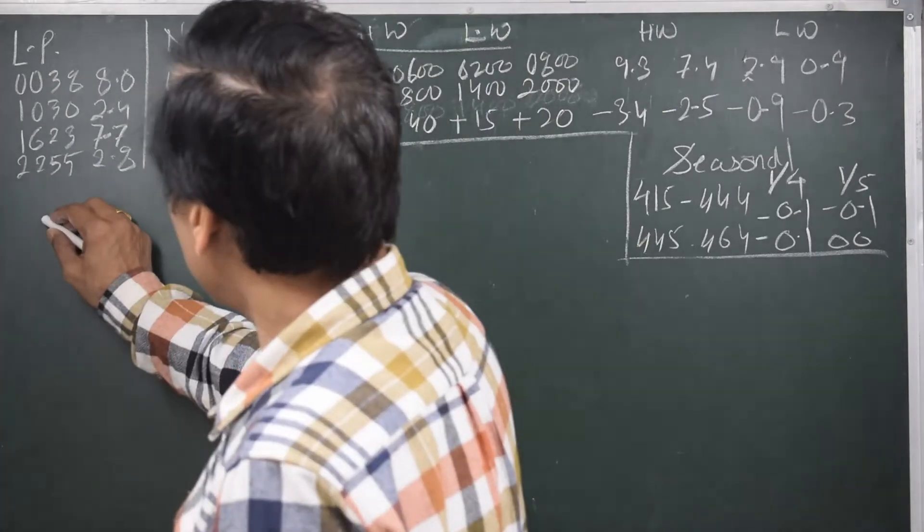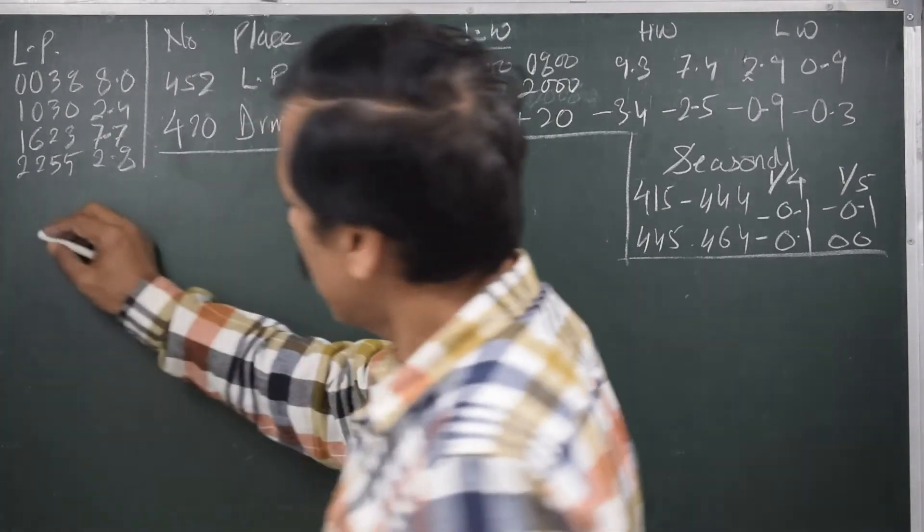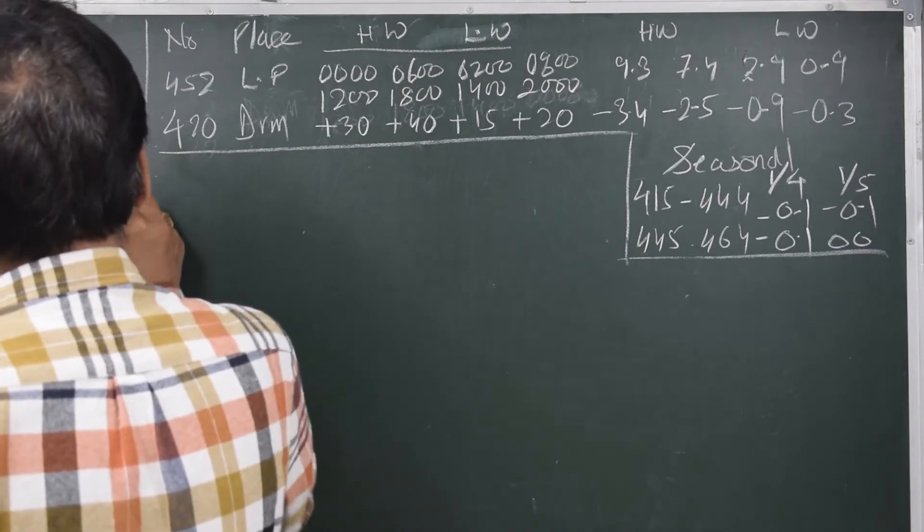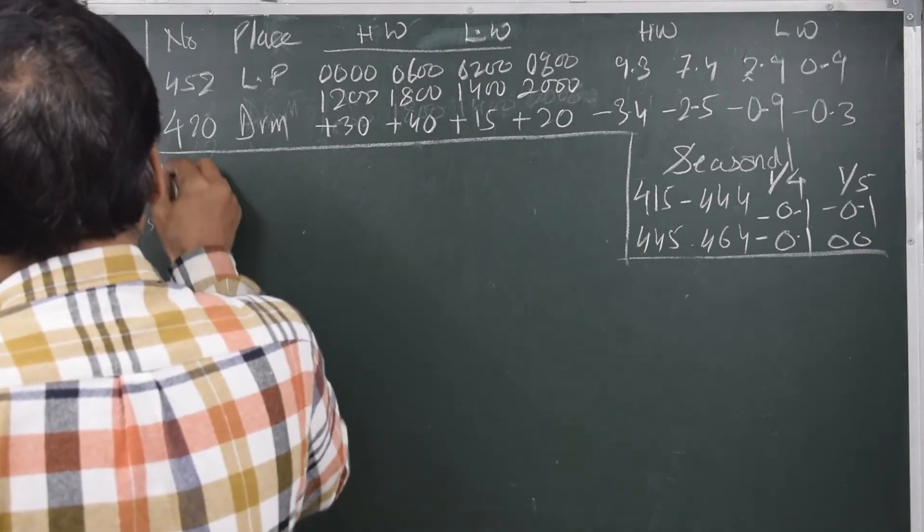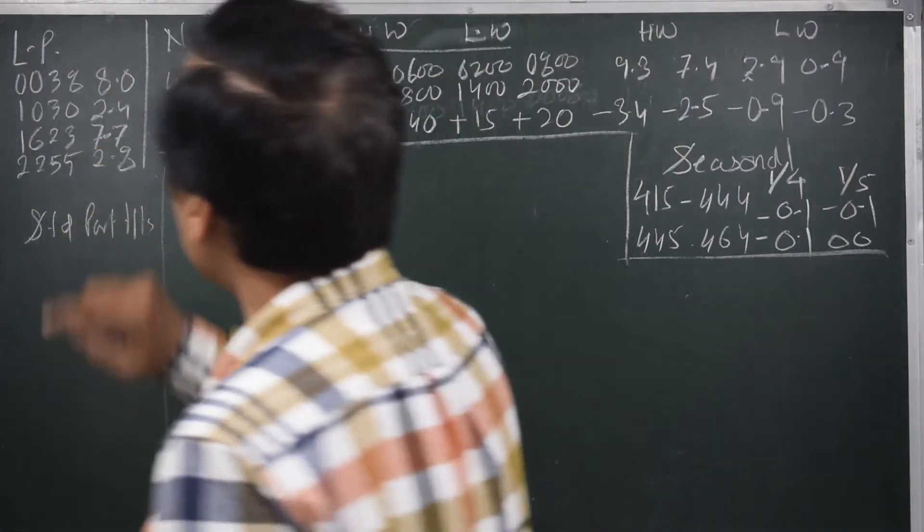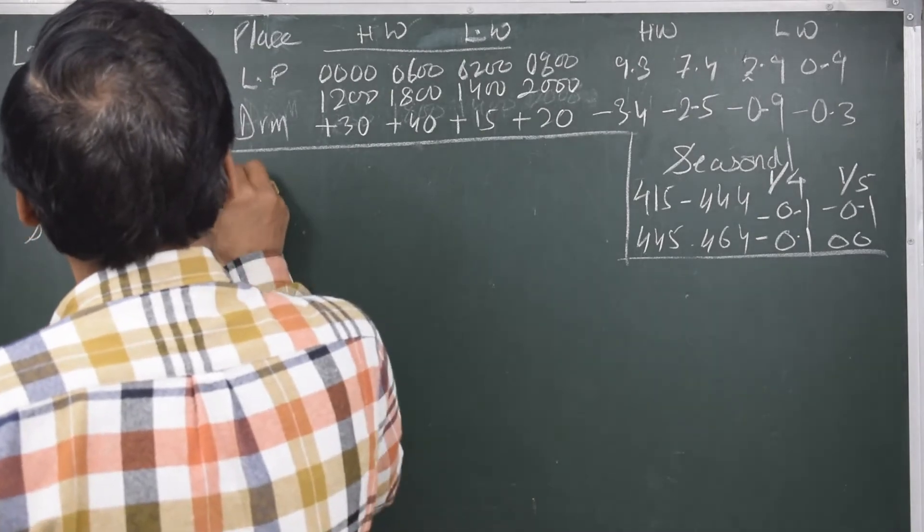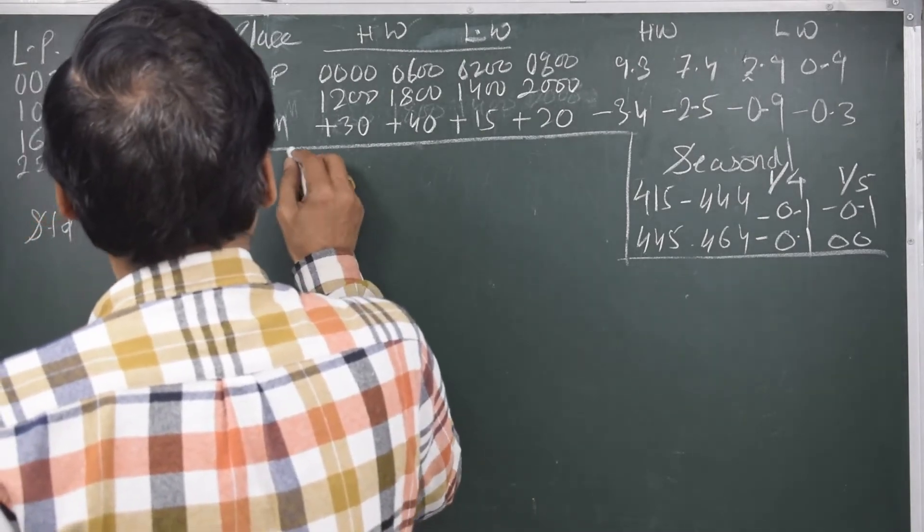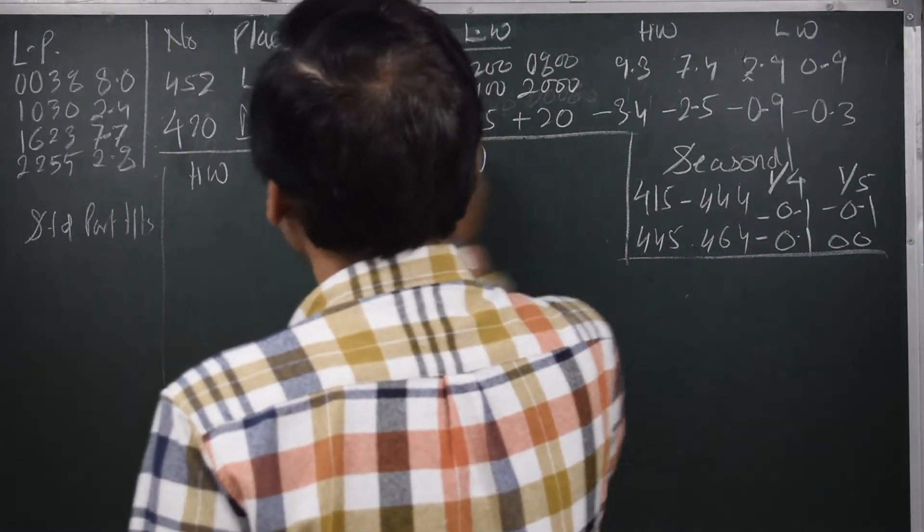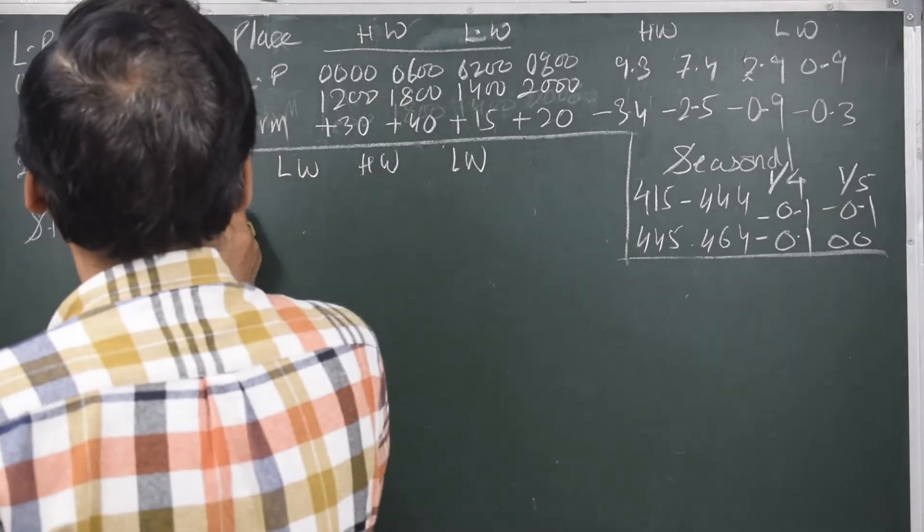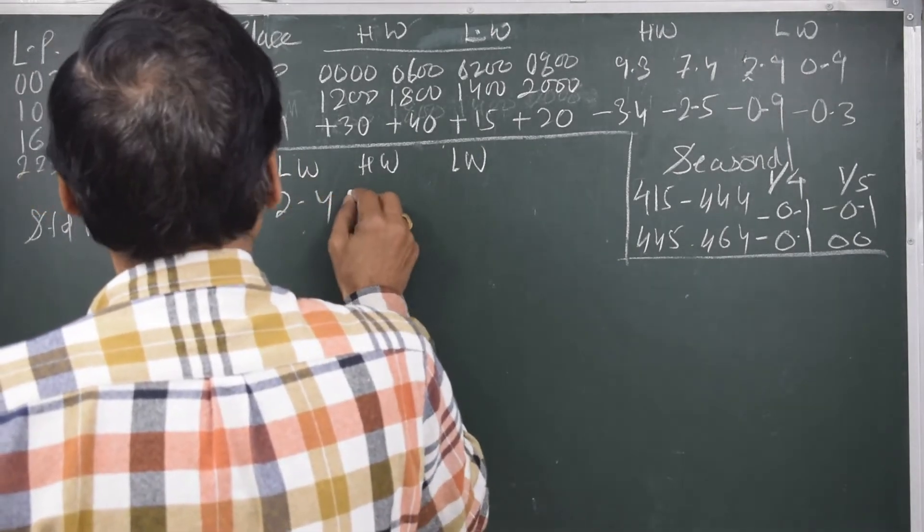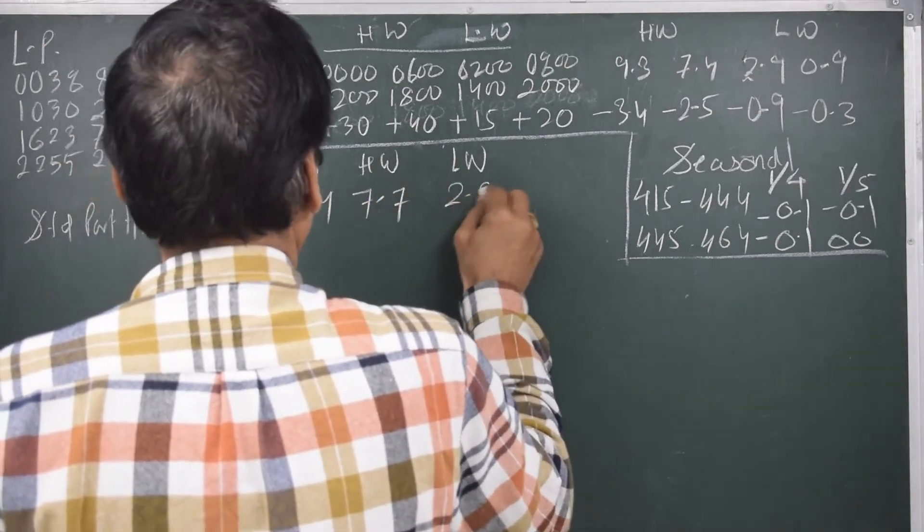Let's find out the height difference. In this part I will make the table standard. We start with standard port heights. Now to write the standard port heights, the first height that I am given is high water. So I will write high water here. Then it is low water, then it is again high water and low water. I will write down all the timings. Standard port heights: it is 8.0, 2.4, 7.7, and 2.8 meters.